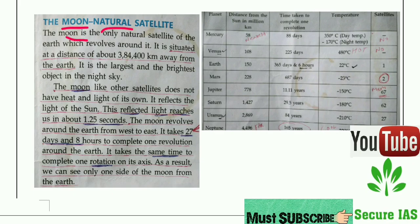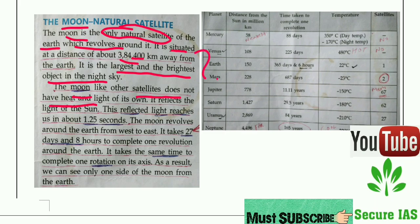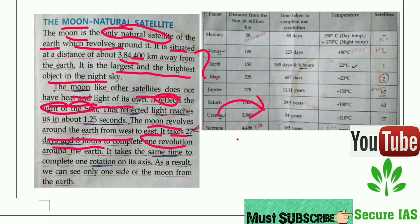The Moon is the only natural satellite of Earth. It is the largest and brightest object in the night sky. The Moon does not have its own heat and light — just like other satellites, it reflects the light of the Sun. The Moon revolves around the Earth from west to east.